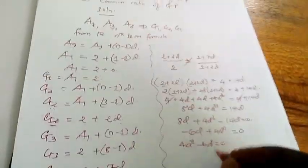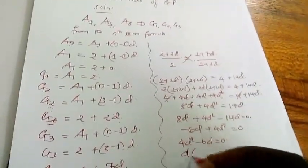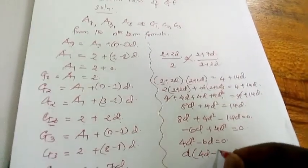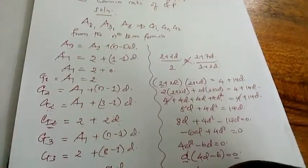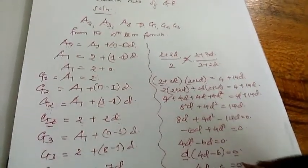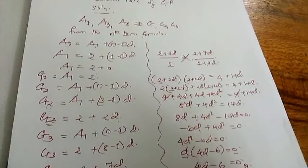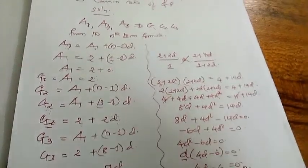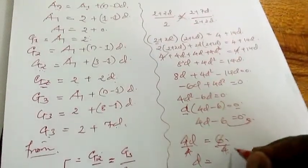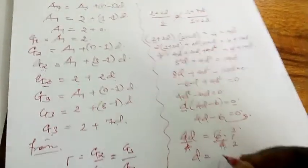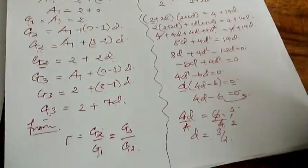It becomes 8D plus 4D squared minus 14D equals 0. That gives us negative 6D plus 4D squared equals 0. In quadratic form, we must start by writing the one with the square, which has D squared. So we start: 4D squared minus 6D equals 0. When we reach here, we factor out one D. So it's D times 4D minus 6 equals 0.